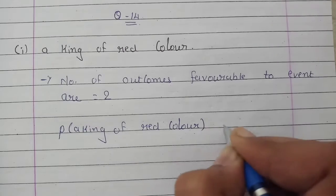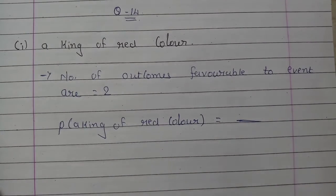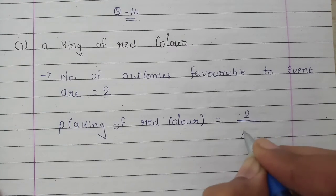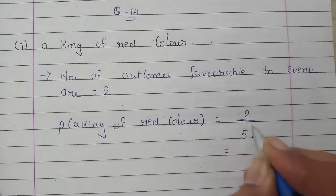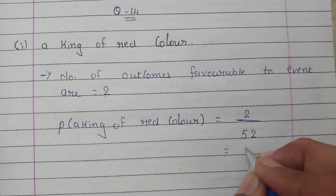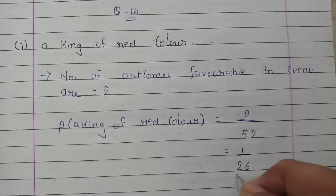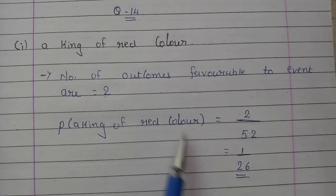Probability of getting a king of red color equals favorable outcomes divided by total number of outcomes. The favorable outcomes are 2 and total outcomes we know are 52. We can divide both by 2: 52 divided by 2 gives 26. So the probability of getting a king of red color is 1 upon 26.